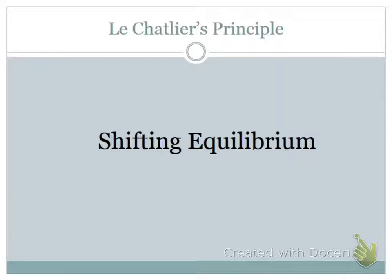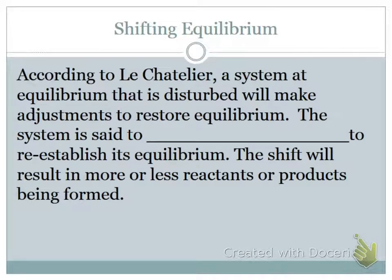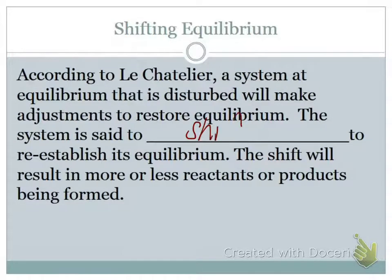This brings us to Le Chatelier's Principle. According to Le Chatelier, a system at equilibrium — we're talking about systems that have established equilibrium, and then we're going to do something to change it, we're going to stress it. What happens is it adjusts, making adjustments to restore its equilibrium. It is said to shift — we'll say things like shift left, shift right, or no shift. Shift left means it favors the reactants, because that's the left side of the equation. This is for a system that was already at equilibrium, and then we made a change.